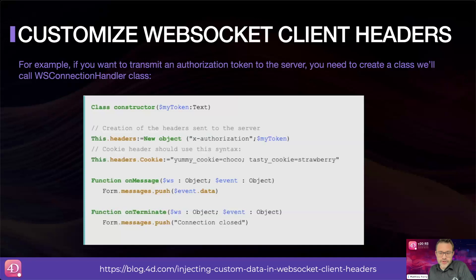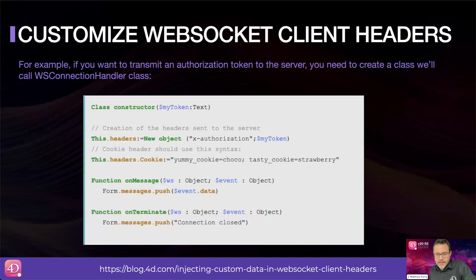With 4D v20 R2, the 4D WebSocket class allows you to create a WebSocket client to connect to your server or to any WebSocket server, 4D or non-4D. With 4D v20 R3, you can now send security details, application-specific data, or any other relevant information to the server using WebSocket client headers. When implementing a WebSocket client, you need to create a class to handle its events. This class now introduces a headers attribute for flexible management of WebSocket client headers — for example, sending an authorization token.